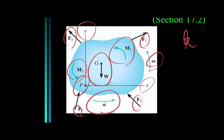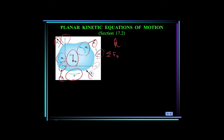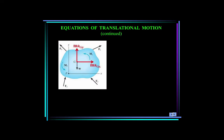We can apply Newton's equations of motion in both the x and y directions, similar to what we did for a particle. The summation of forces in the x direction equals the mass of the body times acceleration of the mass center in x. Likewise, summation of forces in y equals mass times acceleration of the mass center in y. The kinetic diagram shows the mass times acceleration vector components at the mass center.